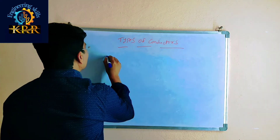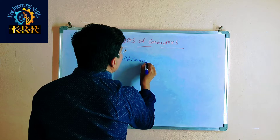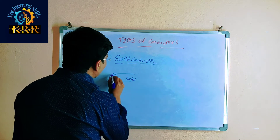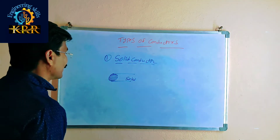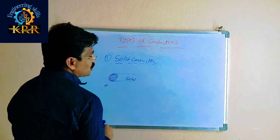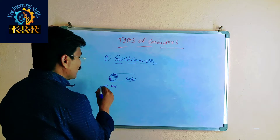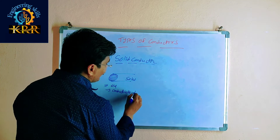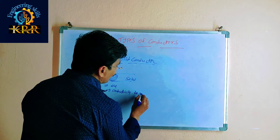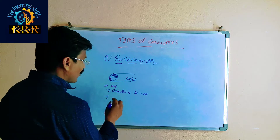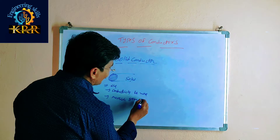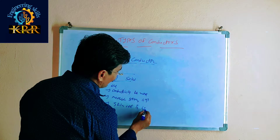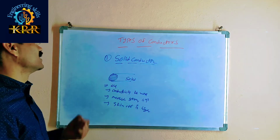First, if you go for the solid conductor — this is the solid conductor. This solid conductor can be made with copper, so the conductivity is more. The mechanical strength is also high. The skin effect is also high in the solid conductor.